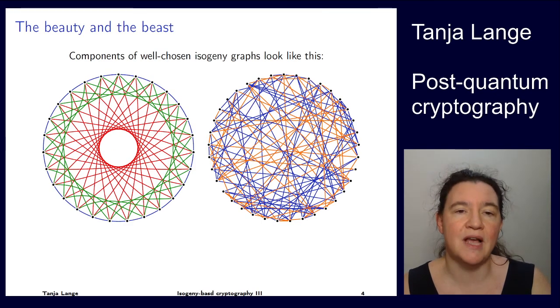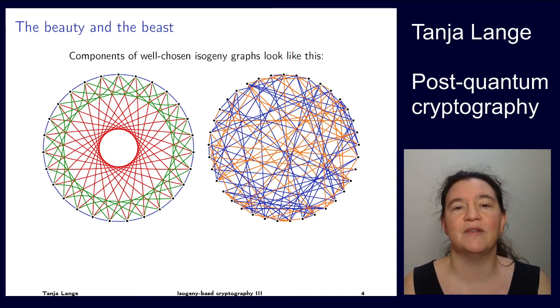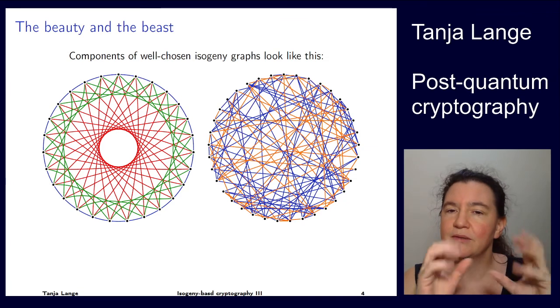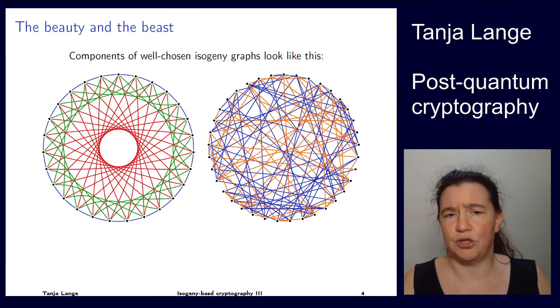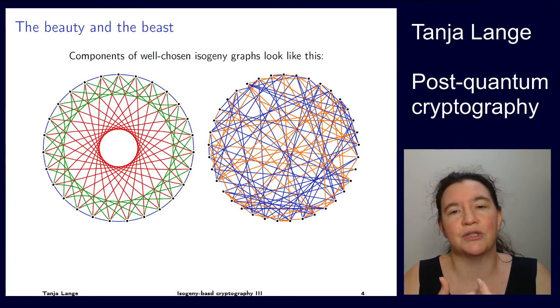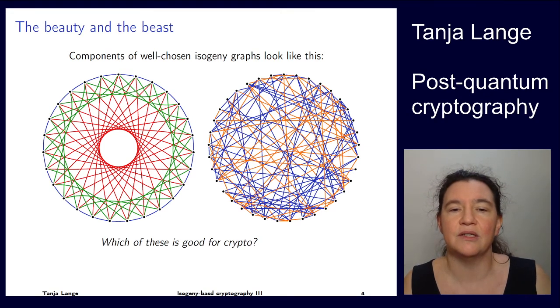So here we have two examples of isogeny graphs. We have something which looks exactly like this dreamcatcher picture that I showed you for the square and multiply method. And on the right we have one which is a lot less structured. And so you might wonder, like, which one is the right one for doing cryptography. And in some sense, we like something with structure. We understand this well. We're used to this in the square and multiply. On the other hand, often enough, structure is problematic for security. So no structure might be better. And in this case, the interesting answer is, well, which one is good for cryptography. And actually, both of them are good.